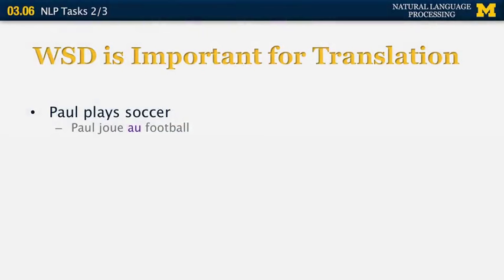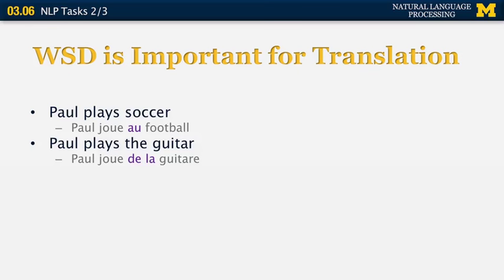Looking at some examples: in English, the word play is ambiguous. It can mean to play a sport — such as 'Paul plays soccer.' To translate this into French, you use the preposition-article combination 'au' to indicate playing a sport. But if you're playing a musical instrument, you use a different structure: the preposition 'de' followed by the article 'la.' So every time you have an instrument, you use 'de'; every time you have a sport, you use 'à,' which in this case contracts to 'au.'